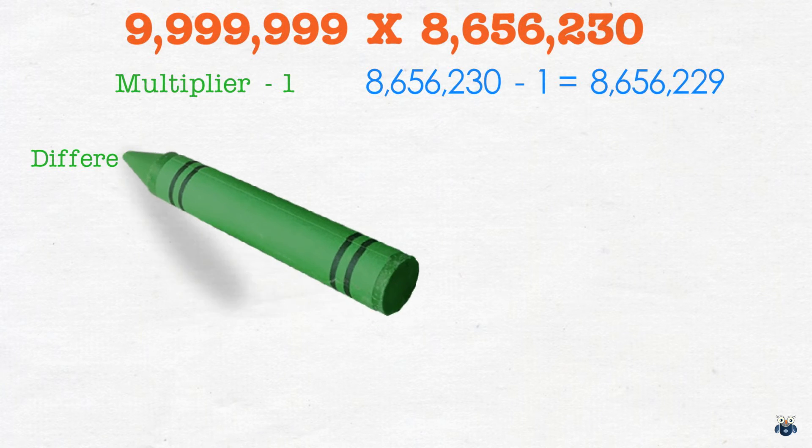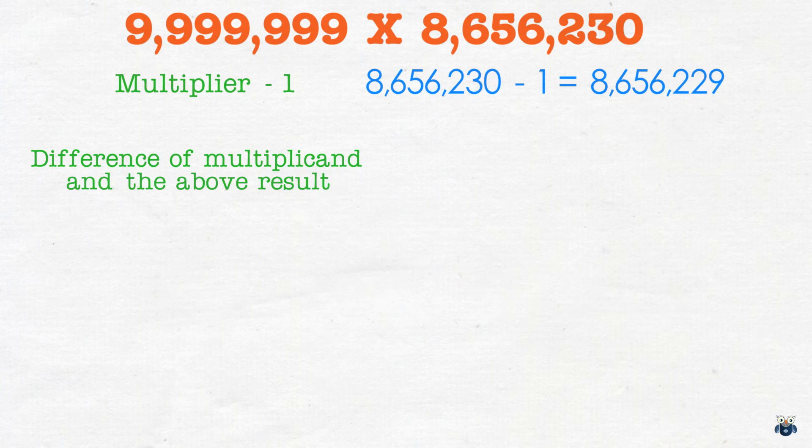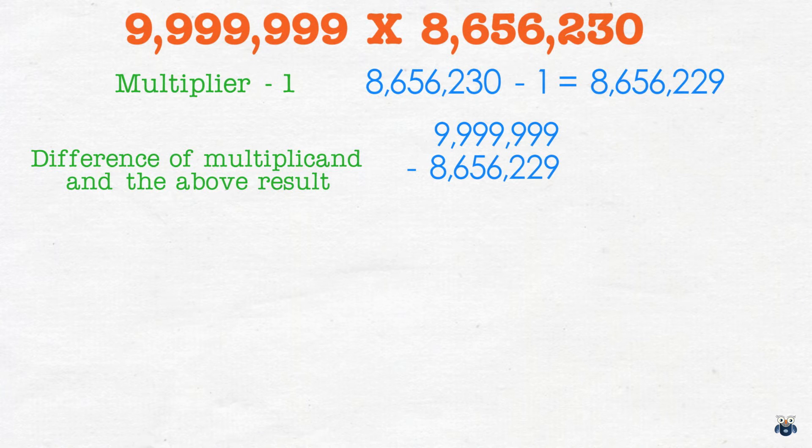The second part is the difference of the multiplicand and the above result. We thus subtract 8,656,229 from 9,999,999. Let's do this together shall we?